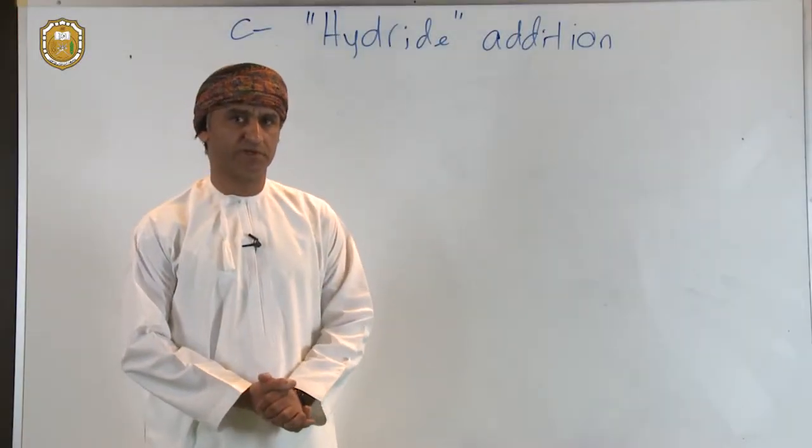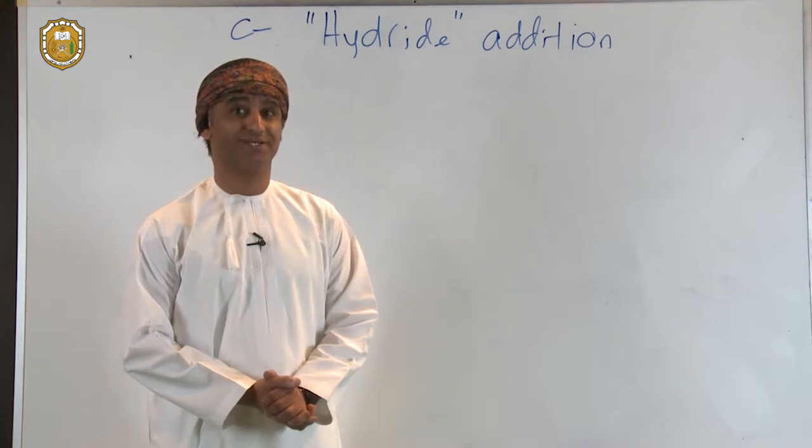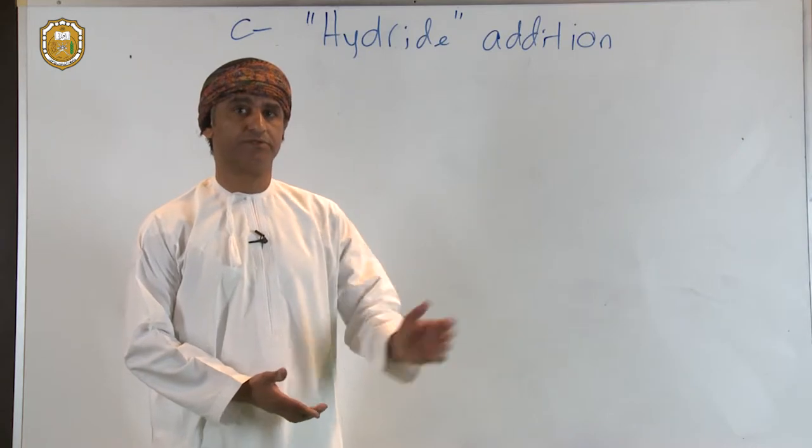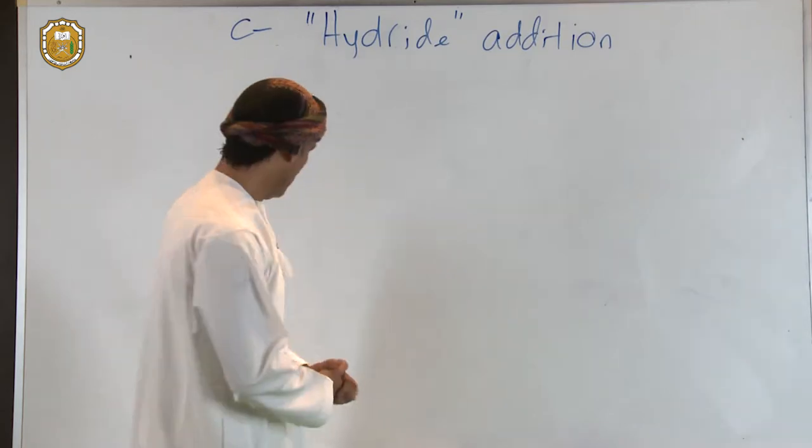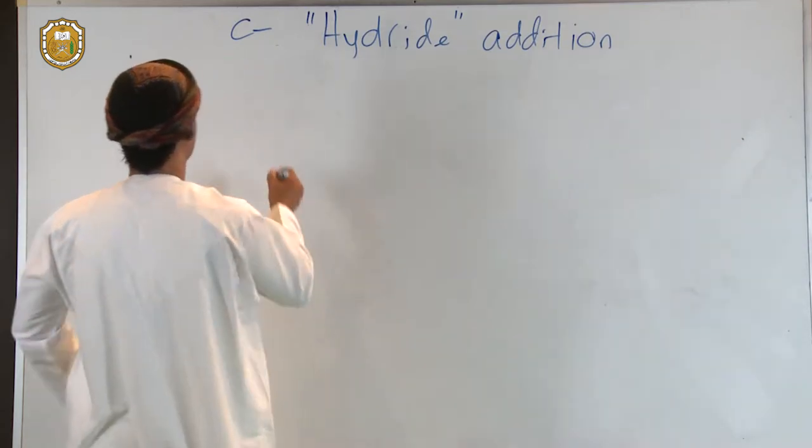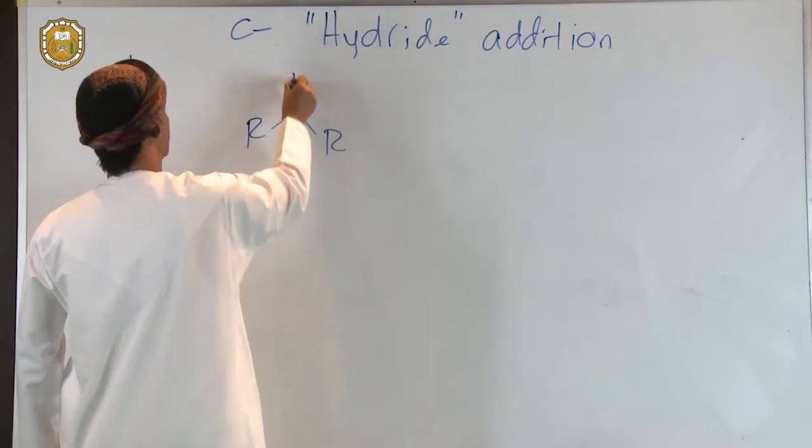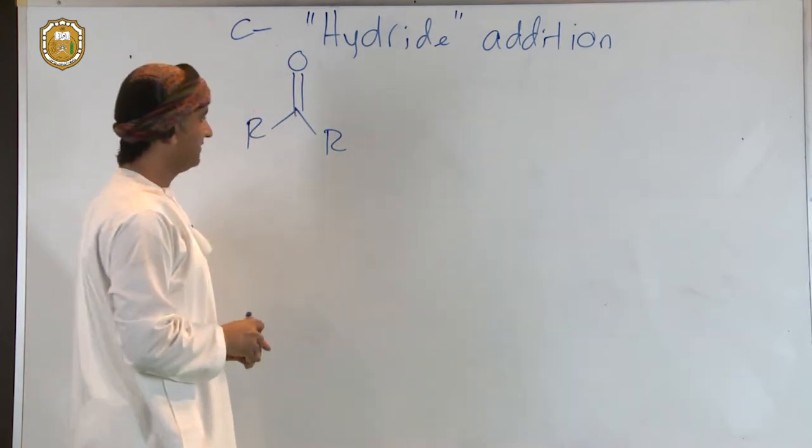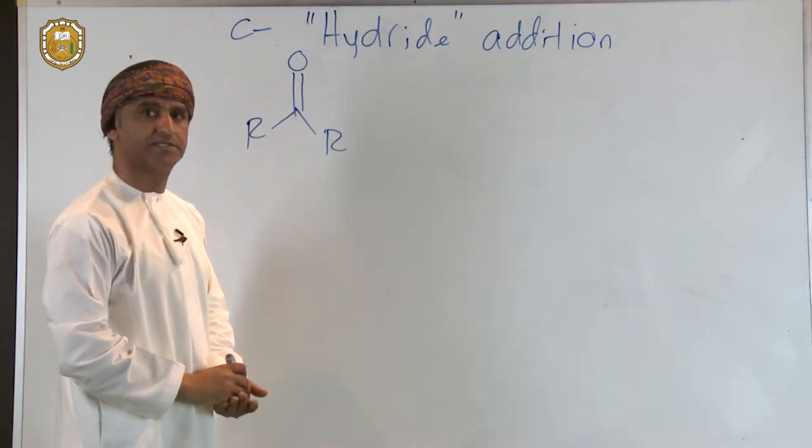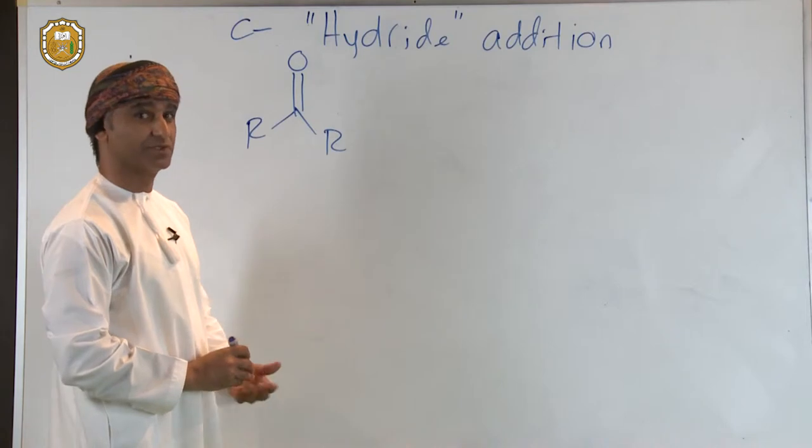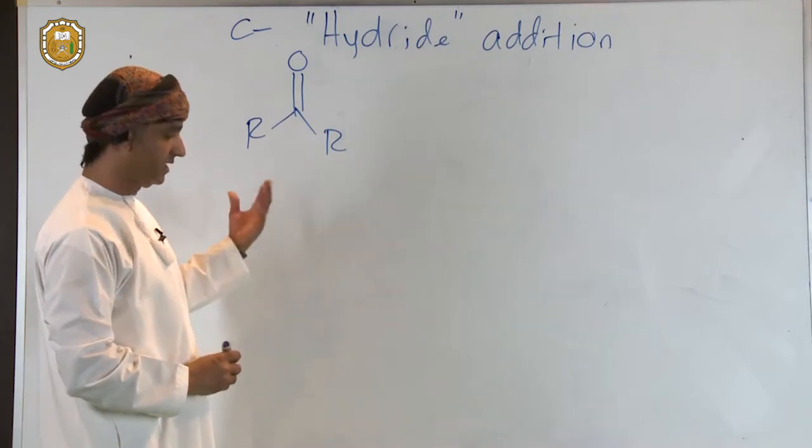Let's now try to think of a possible mechanism for the reaction of aldehydes and ketones with sodium borohydride in order to give the corresponding alcohols. Let's draw a general structure for ketones, so something like that. And we have seen before that aldehydes and ketones react with sodium borohydride in order to give the corresponding alcohol.